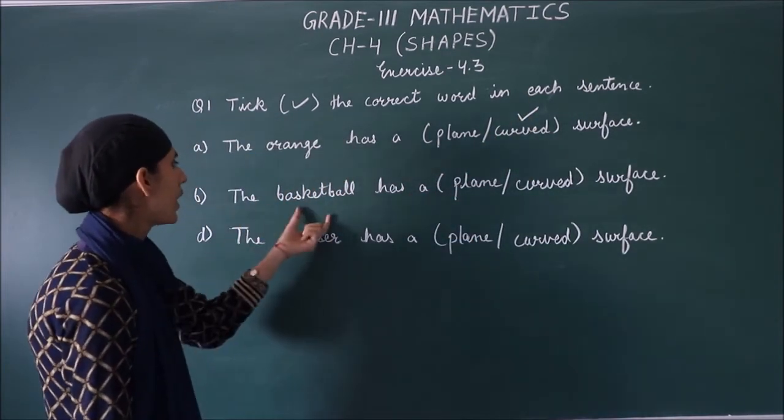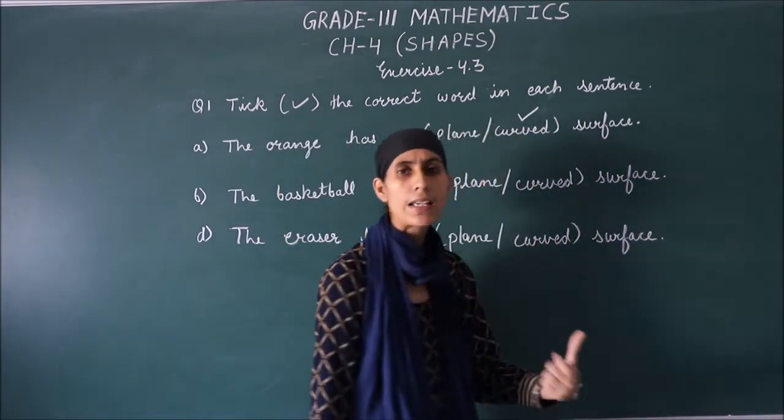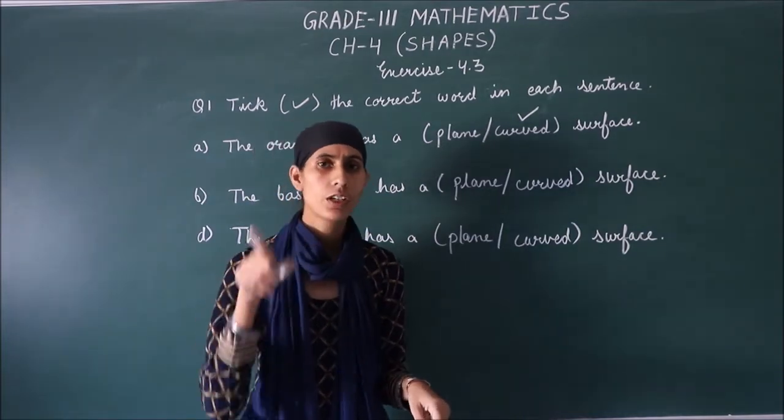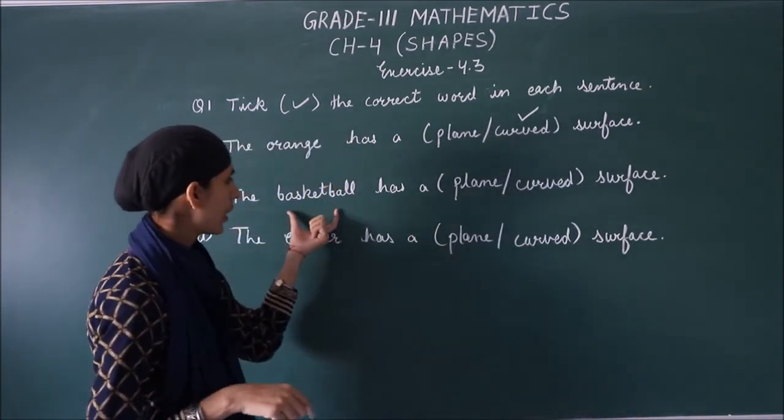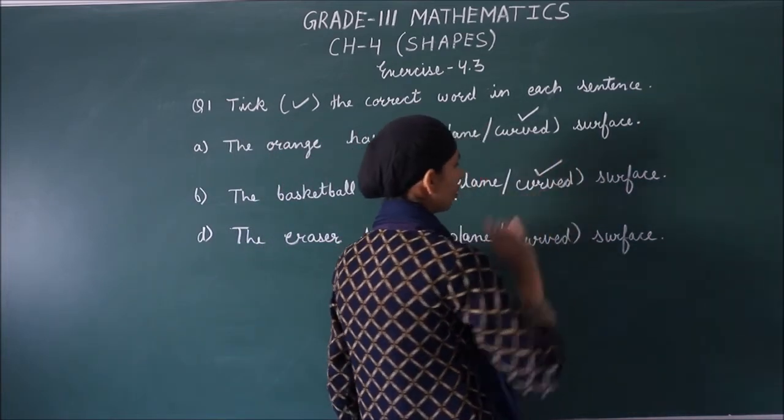Next. The basketball has a plane or curved surface. The ball has a curved shape. So the basketball, how is the surface? Curved surface. So we will click on curved.